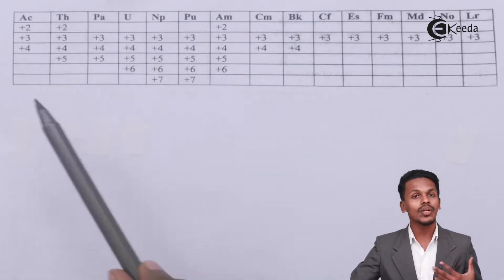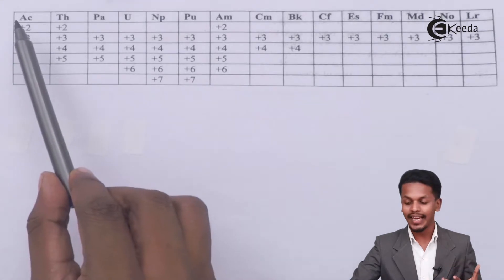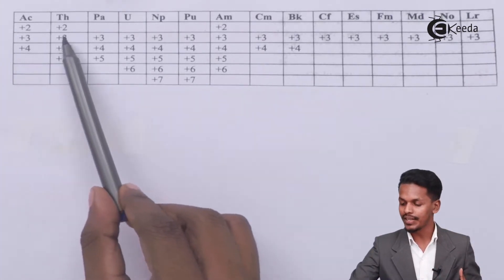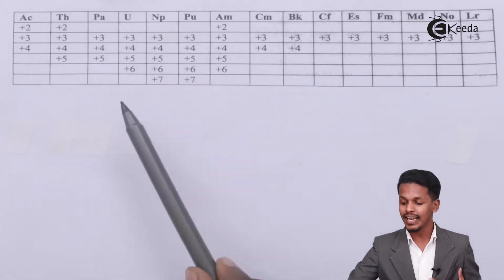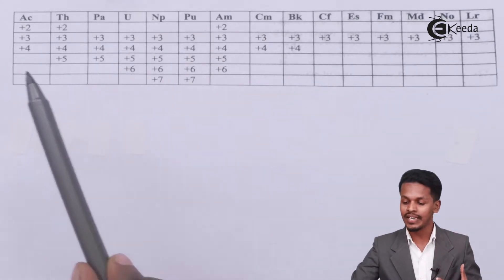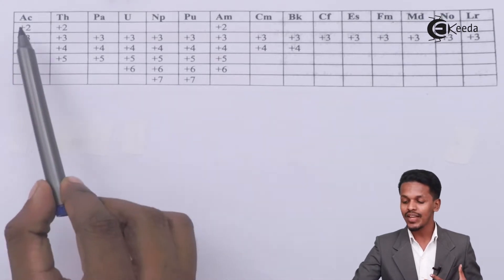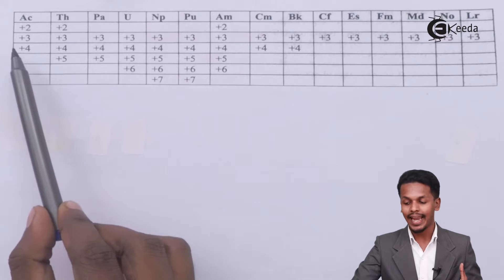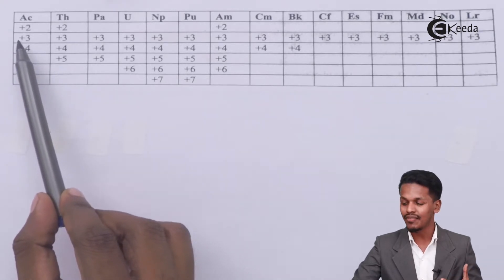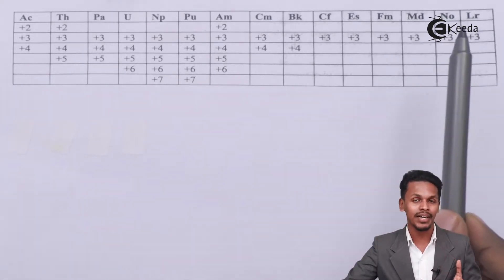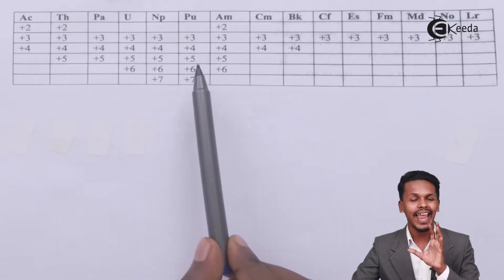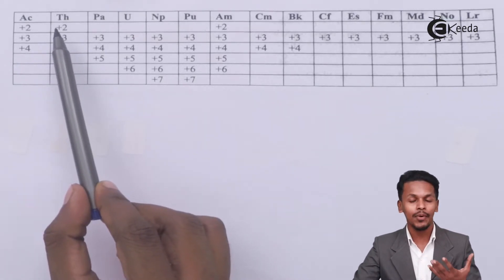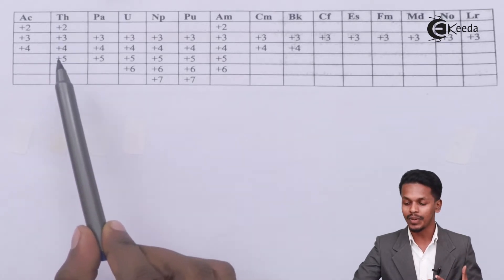This is a table where we can understand that starting from actinium to lawrencium, every element has a common oxidation state of +3. But there are also certain elements which have variable oxidation states ranging from +2 to +7. For actinium, it ranges from +2 to +4, and +3 is the common oxidation state applicable for every element in the actinoid series. For thorium, it has a variable oxidation state ranging from +2 to +5.